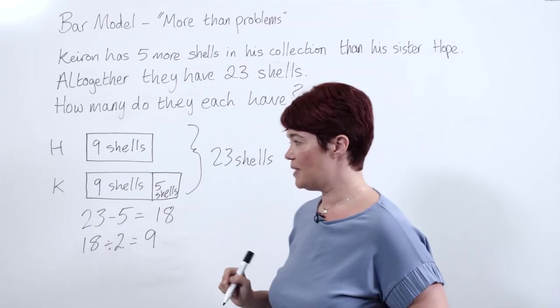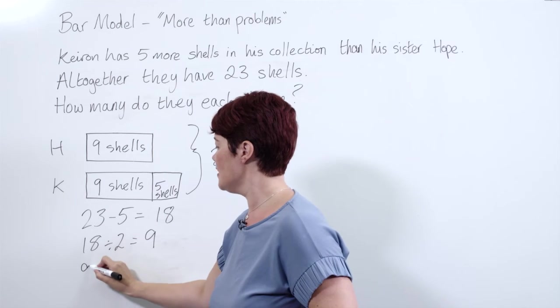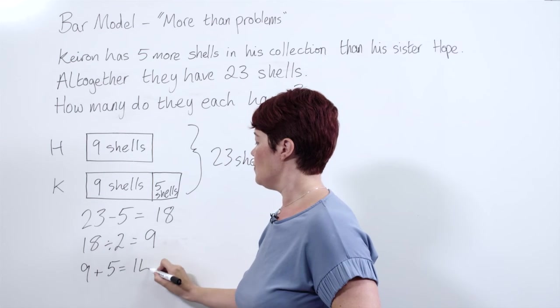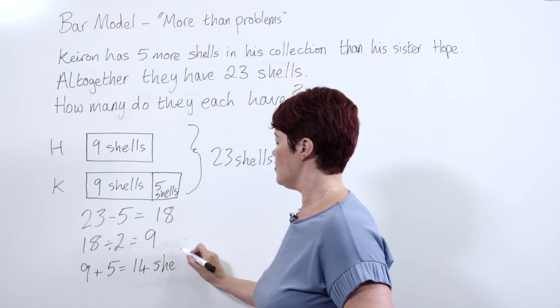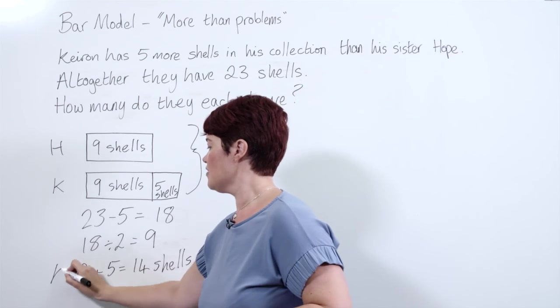Kieran, we have to do a little bit of work. Kieran has 9 plus 5 shells, so altogether Kieran has 14 shells.